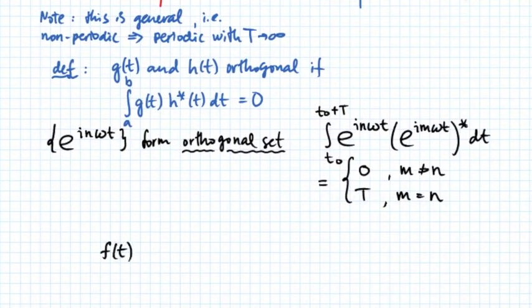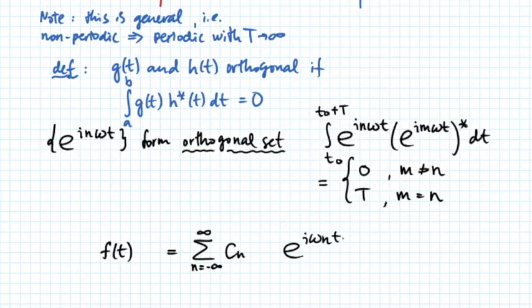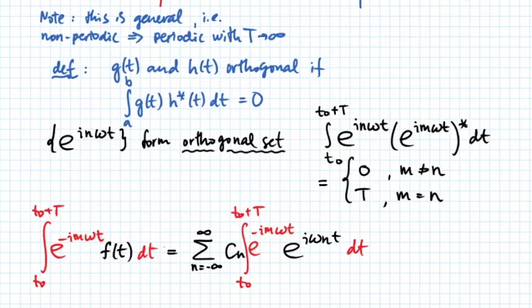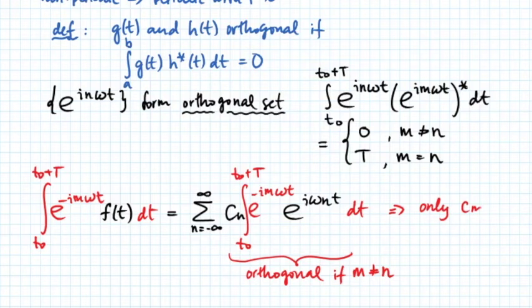Let's rewrite the decomposition form that we are trying to apply. Let us multiply both the right hand side and the left hand side by e minus i m omega t. And let's integrate both sides from t0 to t0 plus capital T where we will use the fact that functions e to the i n omega t are orthogonal whenever m is not equal to index n. So what that means, on the right hand side, only coefficient C sub m survives.